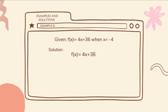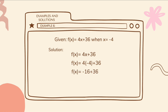Example number 6. For our last example, we have the given f of x is equal to 4x plus 36, when x is equal to negative 4. Substitute negative 4 to the given, and we have f of x is equal to 4 times negative 4 plus 36. We can now simplify the equation. 4 times negative 4 is equal to negative 16. Negative 16 plus 36 is equal to 20. Our final answer is f of x is equal to 20.